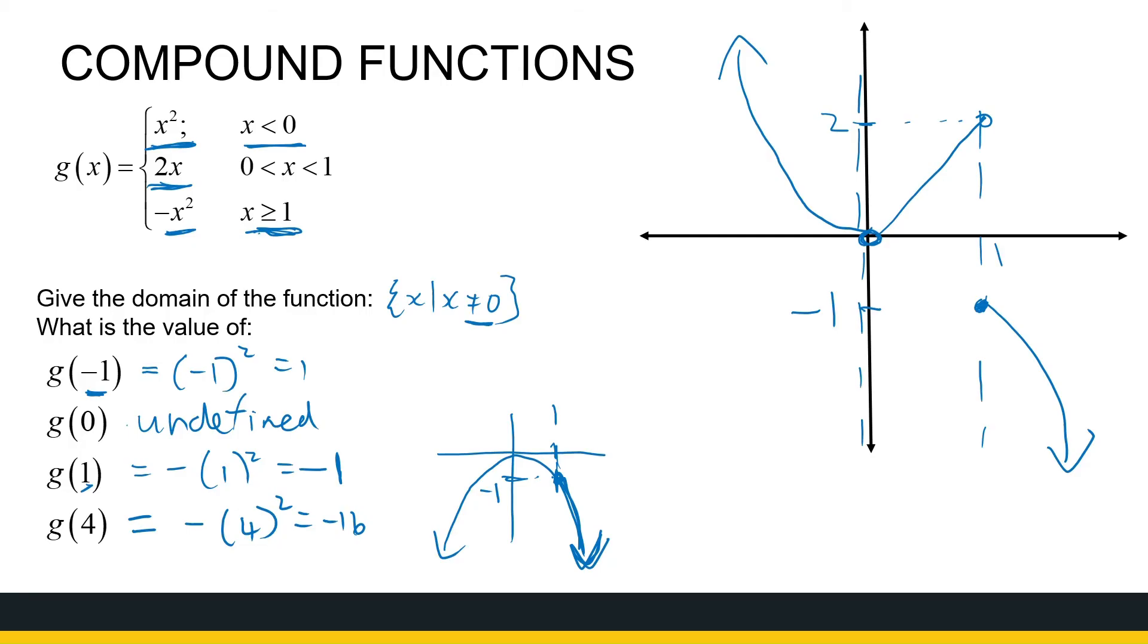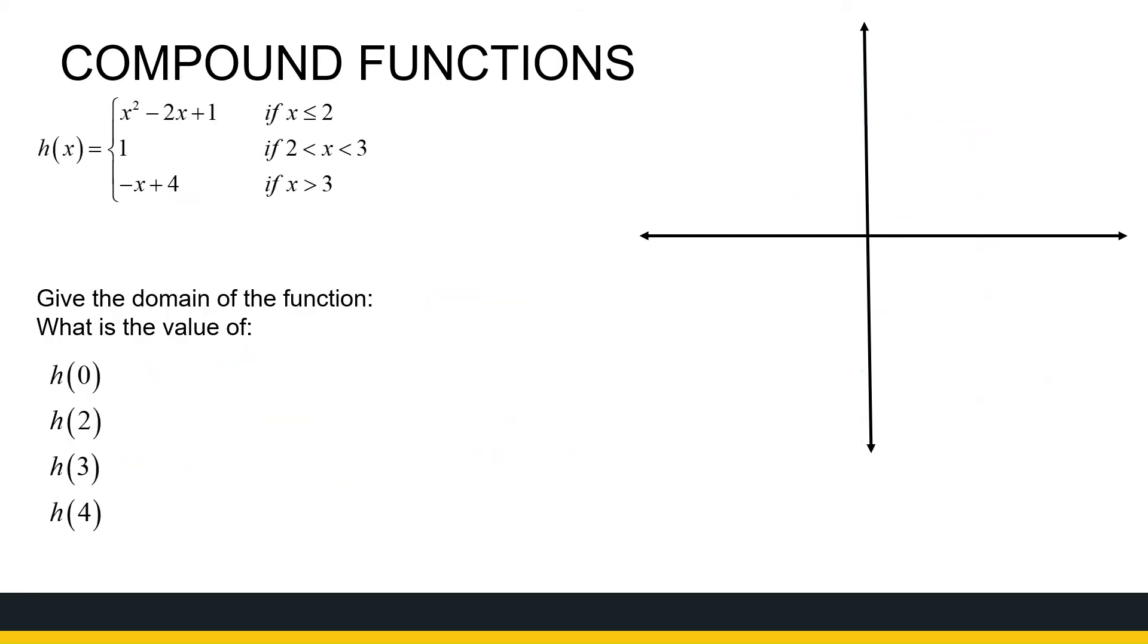Let's look at one more. H of x is defined as follows. Three sections: x is less than or equal to 2, between 2 and 3, for x greater than 3. So it's going to be chopped up here at 2, 3, and there we go. All right. So let's take a look. The domain of this function, all x values, but not 3. So it's all the x's given x is not equal to 3.